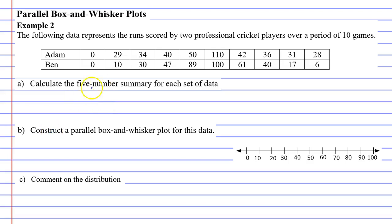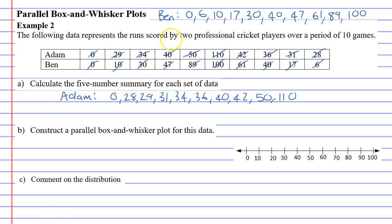So the first thing we're going to do, we need to put them in order. So let's look at Adam, whose lowest score was zero. I'm going to pause and I'll fill this in. All right, I've put Ben up here just to give us some room. So let's start by finding the median, one, two, three, four, five numbers in. So we've got a median of 35 for Adam, and Ben has a median of 35 as well.